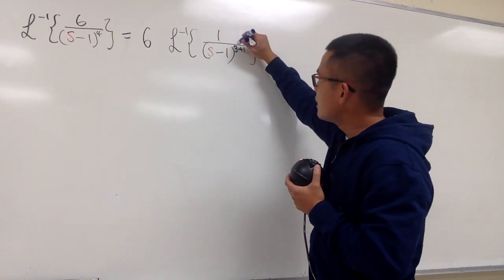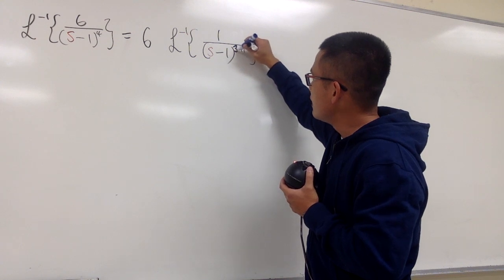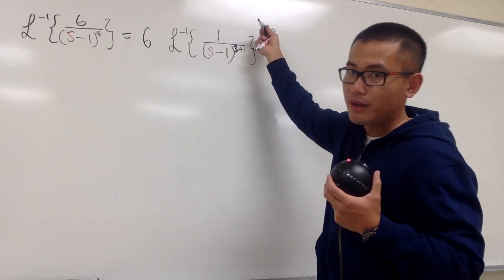Well, this right here, we have the 3 for the n. On the top, I don't have the 3 factorial though.